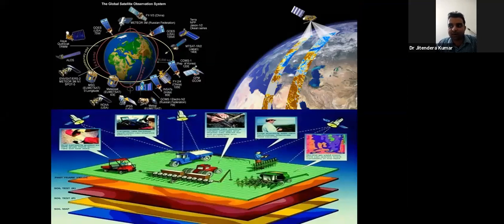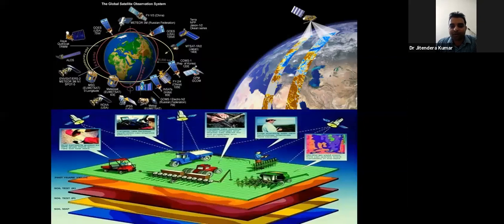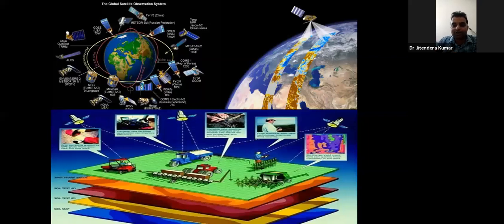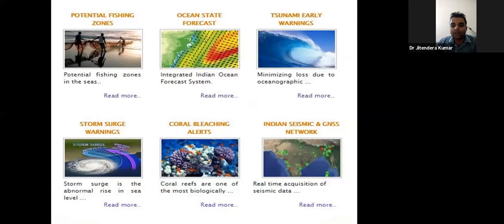Now a few introductory points on remote sensing. Many of you are aware of satellites — they are available in space, and even recently Chandrayaan was a big news story. Remote sensing means accessing things without physically touching them — like operating your TV remote. You don't need to go and touch the TV; from a distance you can operate it. Similarly, you can sense things without physical contact — that is called remote sensing.